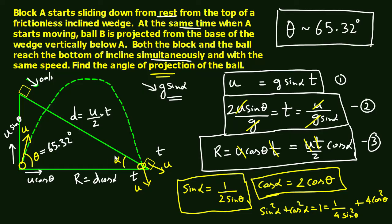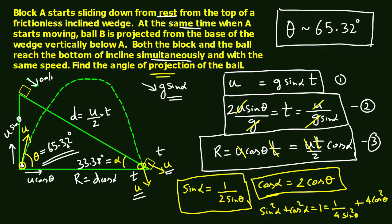Using this value of θ, the incline angle alpha works out to approximately 33.38 degrees. That is the only possible incline and this is the only possible angle of projection for which the block slides down and the ball is projected upward, both starting together, ending together at the bottom with the same speed.